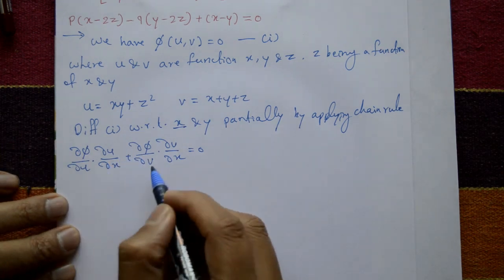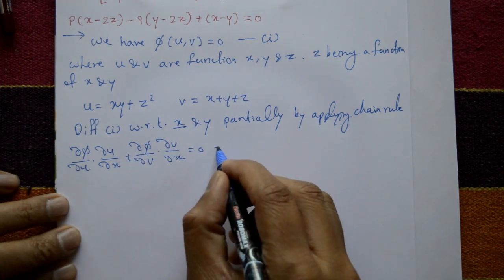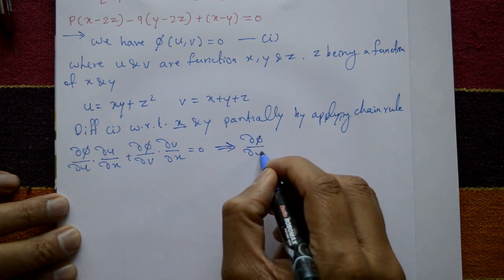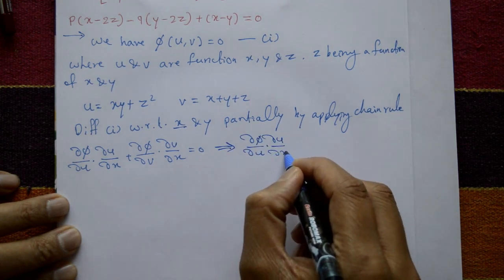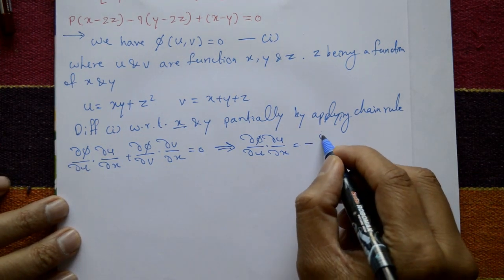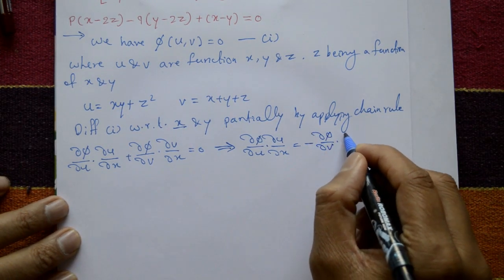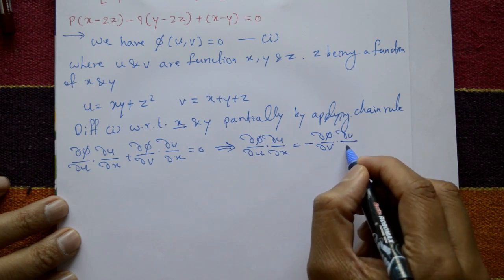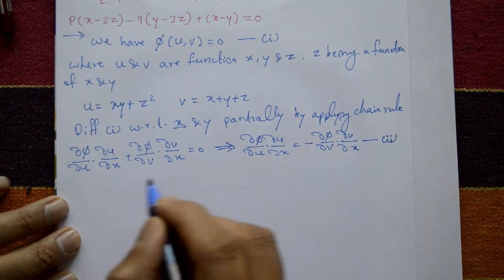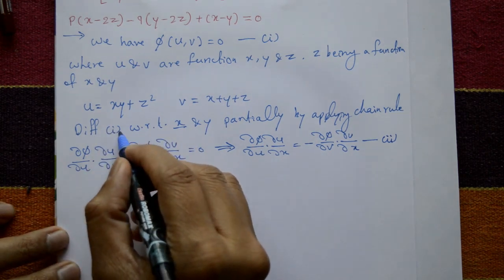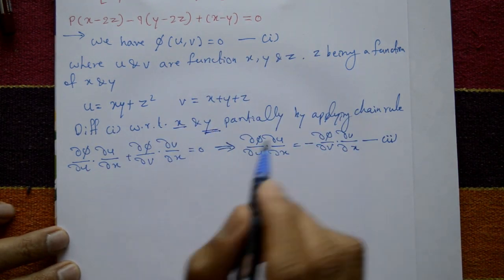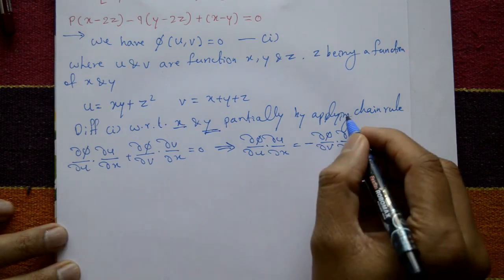Rearranging, ∂φ/∂u · ∂u/∂x = −∂φ/∂v · ∂v/∂x. This is equation number two. Next, differentiate equation one with respect to y partially, by applying the chain rule.